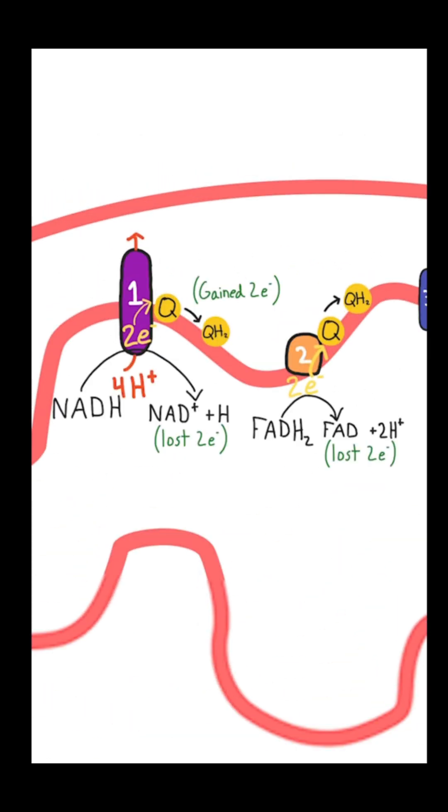There are four proteins that make up this chain, and we're going to look up close at what happens at the first two, which are called Complex 1 and Complex 2.